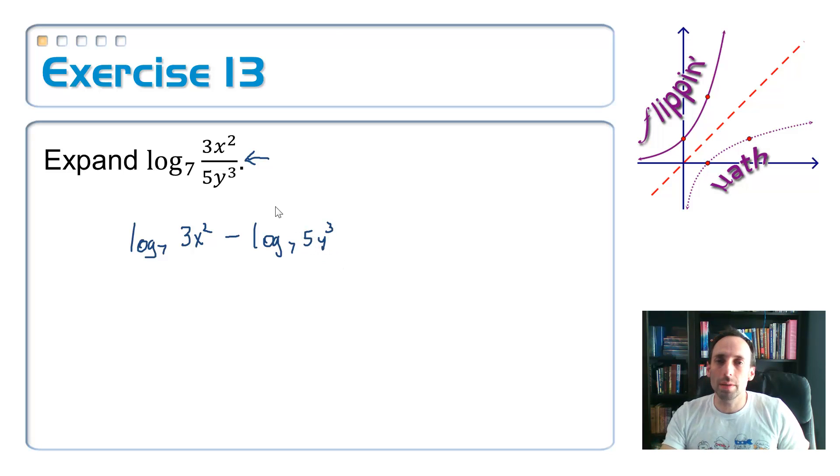Now we're not quite done yet because we can keep expanding out using those properties. Like for example, inside the first one, the log base 7 of 3 times x squared, that's a product. And so we can break up the product with addition. So this becomes the log base 7 of 3 plus the log base 7 of x squared.